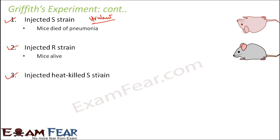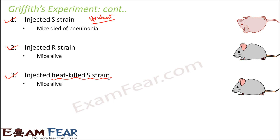In the third part of the experiment, Griffith injected heat-killed S strain into a mouse. Griffith had killed the S strain bacteria by heating them. Now since the bacteria was already dead, the expectation was that it would not cause pneumonia. He injected heat-killed S strain into the mouse and observed that the mouse was alive — it did not die, as expected, since the bacteria causing pneumonia was already dead.